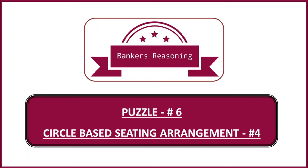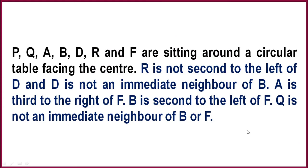Welcome to Bankers Reasoning Channel. Today we will solve puzzle number six in the series, which is based on circular seating arrangement. Here, the number of people sitting is not provided, so we need to count. We have three plus three is six, and one more makes seven. So total persons involved are seven, and all of them are facing towards the center of the table in a circular table.